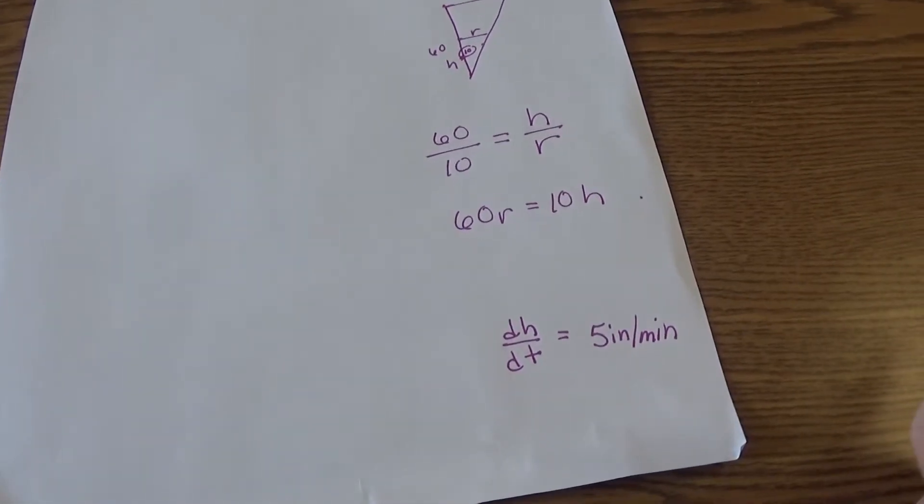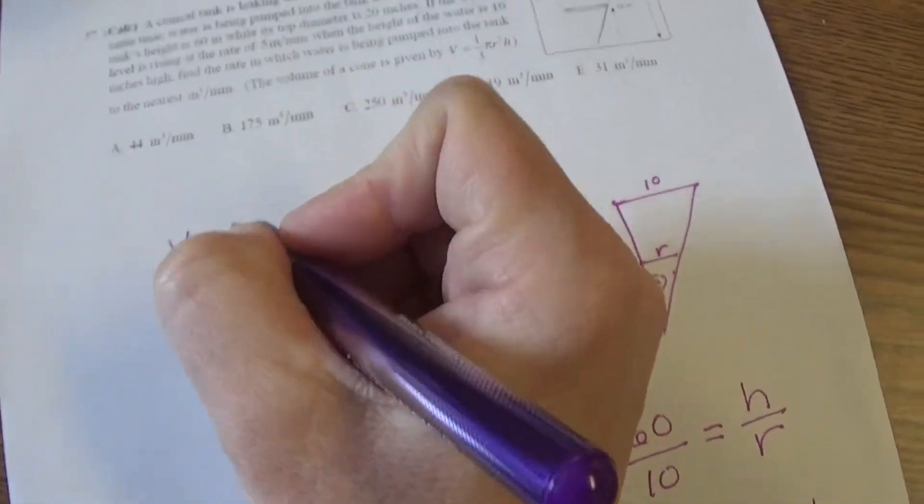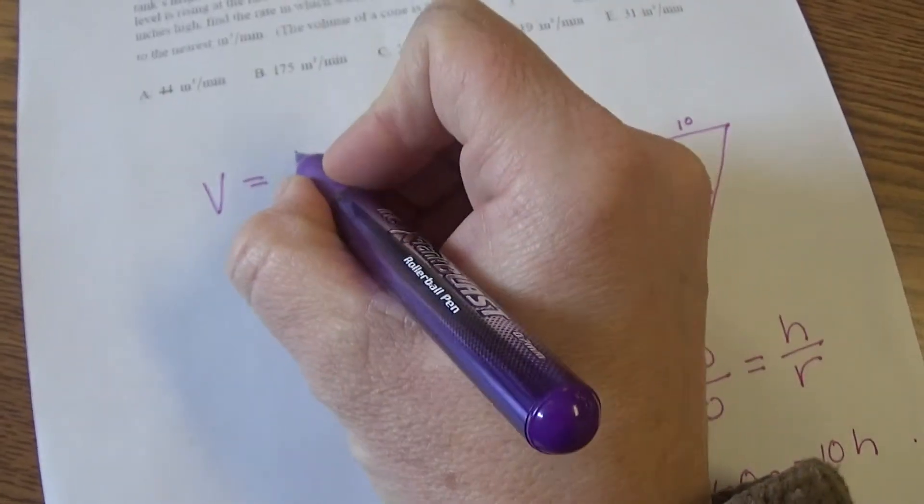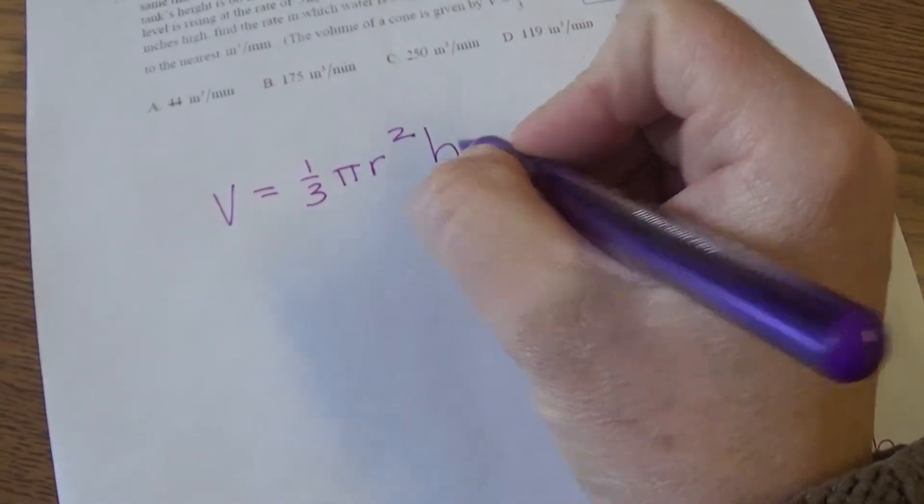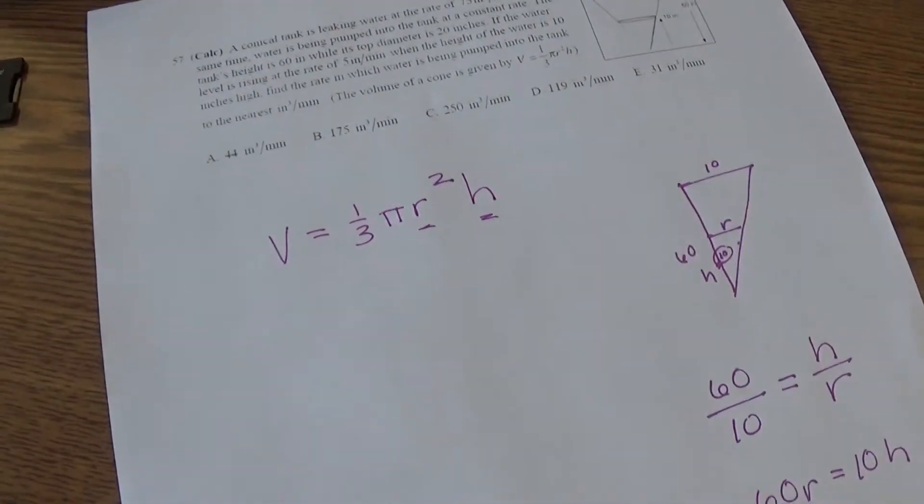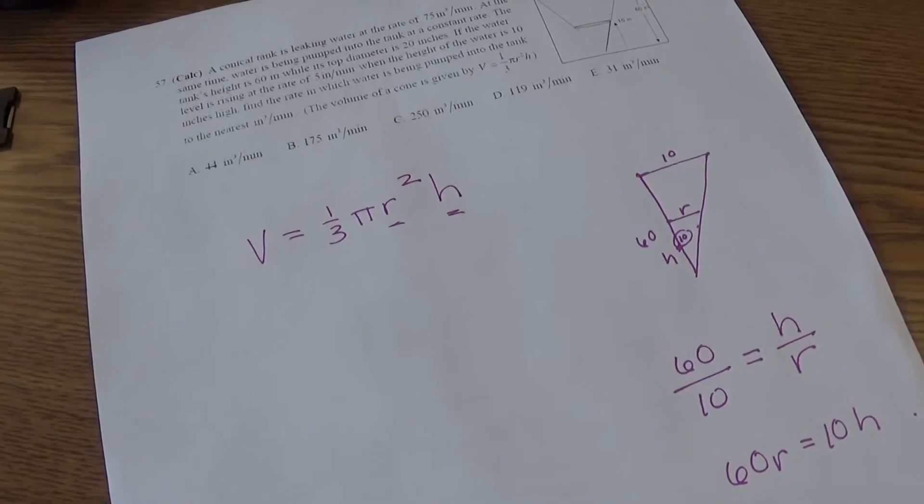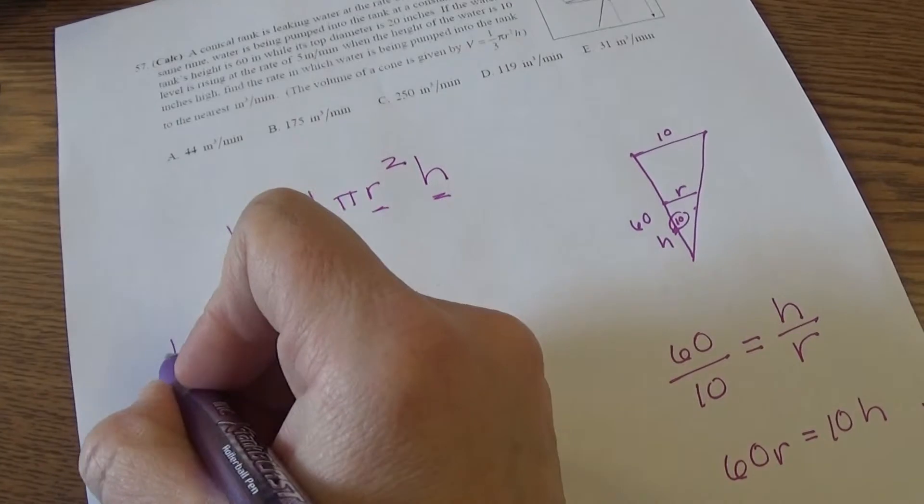I can rewrite the form of that in a minute if I want to. I do know that dh/dt equals 5 inches per minute, so I did write that down here below as well. The next thing we want to do is come up here and look at our volume equation that we're given: V equals one-third pi r squared h.